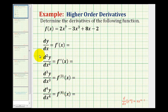In order to determine the second derivative of a function, we first find the derivative function, and then find the derivative of the derivative function. And then for the third derivative, we find the derivative of the second derivative, and so on. In this video we'll find the first through fourth derivative of the given function, and then we'll look at more examples in the next several videos.